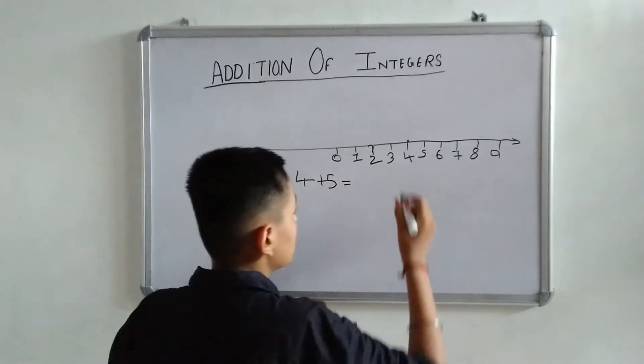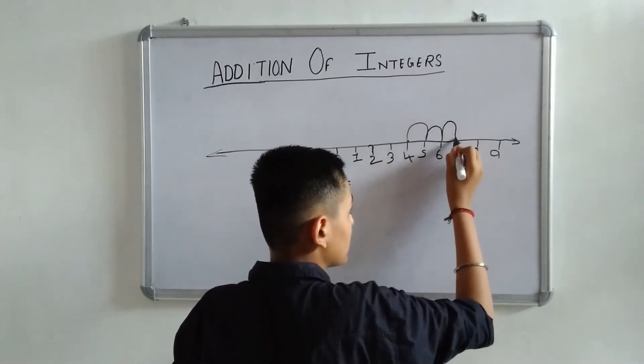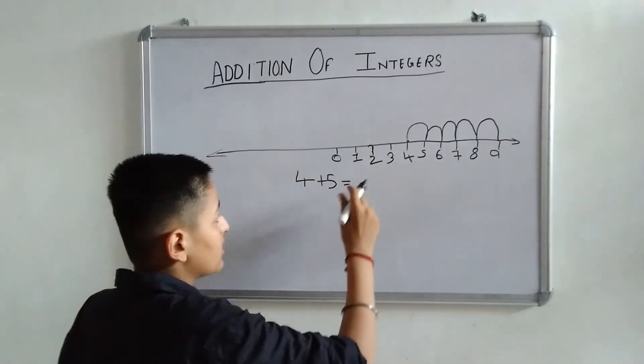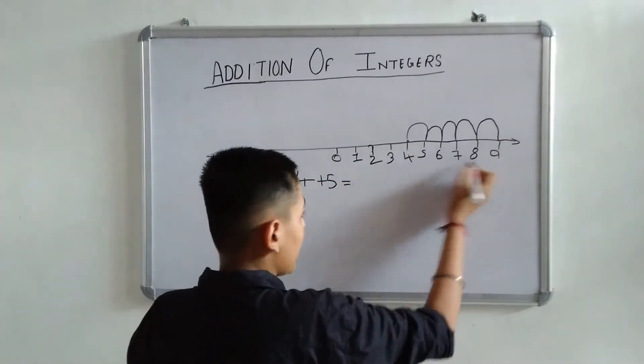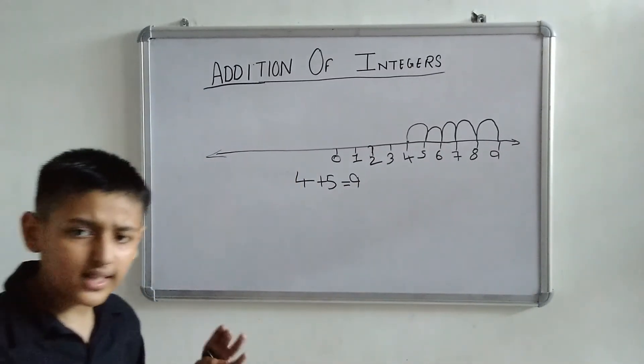Okay friends! Now jump 5 steps: 1, 2, 3, 4, 5. This, the answer is 9. 9 will be the answer. It is very simple.